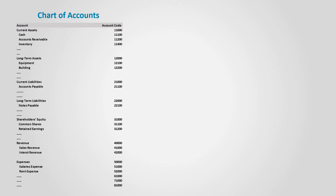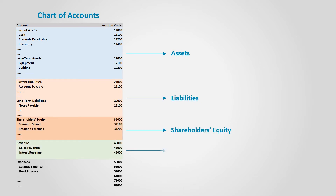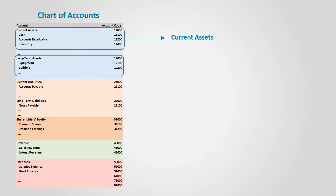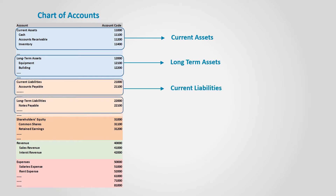The accounts are classified at least into five main groups: assets, liabilities, shareholders' equity, revenues, and expenses. Then, they are categorized into subgroups. For example, assets are categorized into current assets and long-term assets. So also the liabilities.